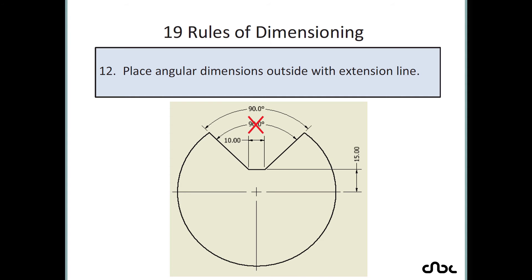Rule number 12: place angular dimensions outside with an extension line. You cannot place an angular dimension directly inside without extension lines, even if it appears clear. You should always have extension lines with all your dimensions.